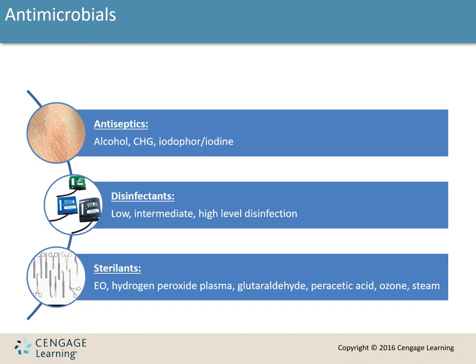The last subcategory of anti-infective agents is antimicrobials, which include antiseptics, disinfectants, and sterilants. Antiseptics are used on living tissue — anytime we do a surgical scrub or prep the patient. Examples include alcohol, chlorhexidine gluconate (CHG), iodophor, chloroxylenol (PCMX), and betadine or iodine. Antiseptics are used on skin for scrub and prep.